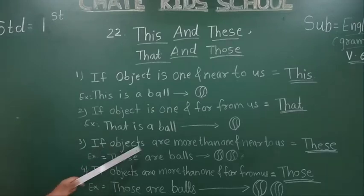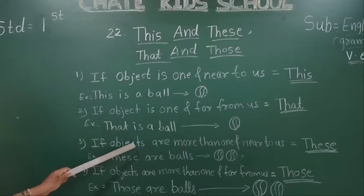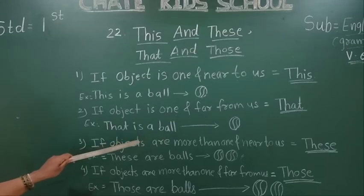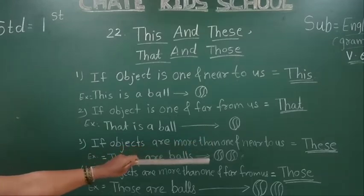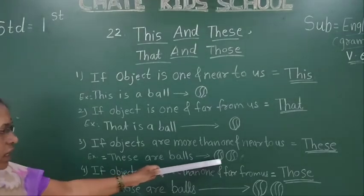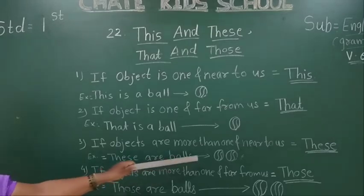Next: if objects are more than one and near to us, we use 'These'. These — T-H-E-S-E. For example: These are balls. How many balls are there? There are two balls. So we write here: These are balls.